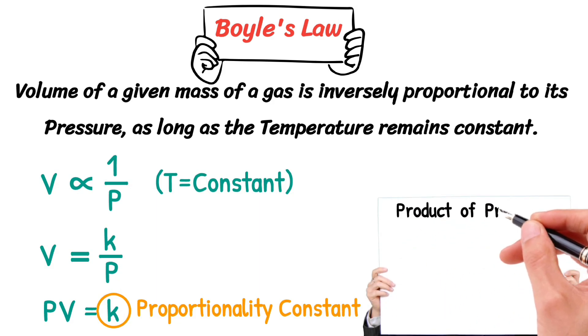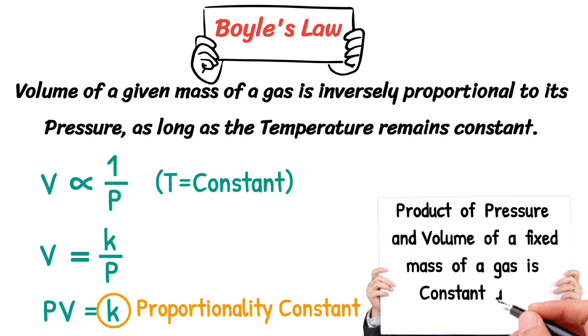Therefore, Boyle's law can be stated as: the product of pressure and volume of a fixed mass of a gas is constant at constant temperature.